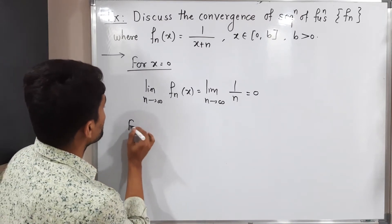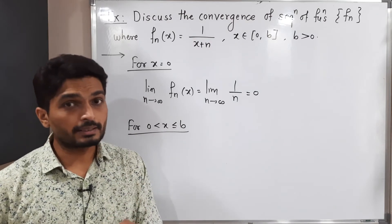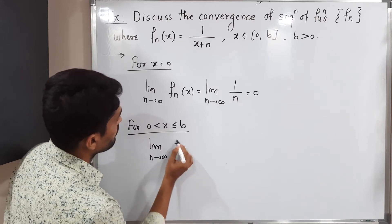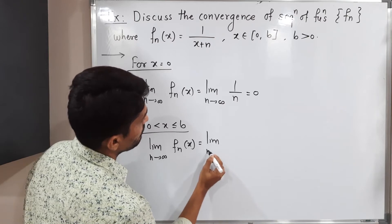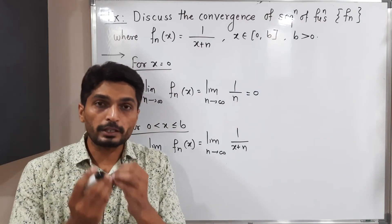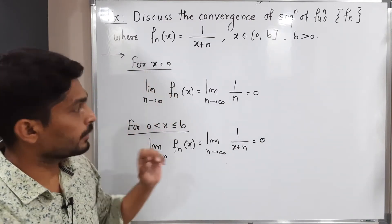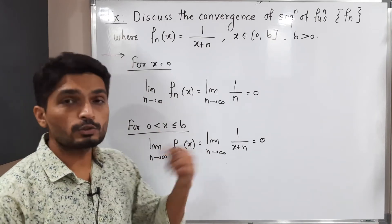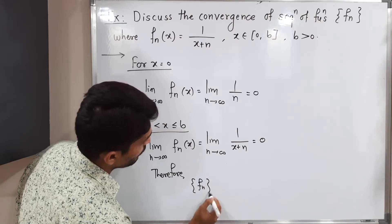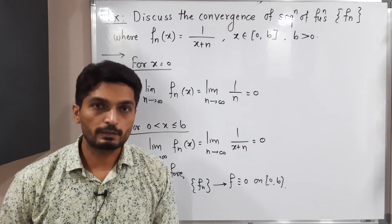Now let us discuss the remaining points where 0 < x ≤ b. In this case we have not considered 0, but all other points of the closed interval [0, b]. The limit as n tends to infinity of fn(x) equals the limit of 1/(x+n). Applying the limit, the denominator goes to infinity, so the value goes to 0. Whether x = 0 or x ≠ 0, we get the limit 0. Therefore, from both cases, the sequence fn converges to f = 0 on the closed interval [0, b].